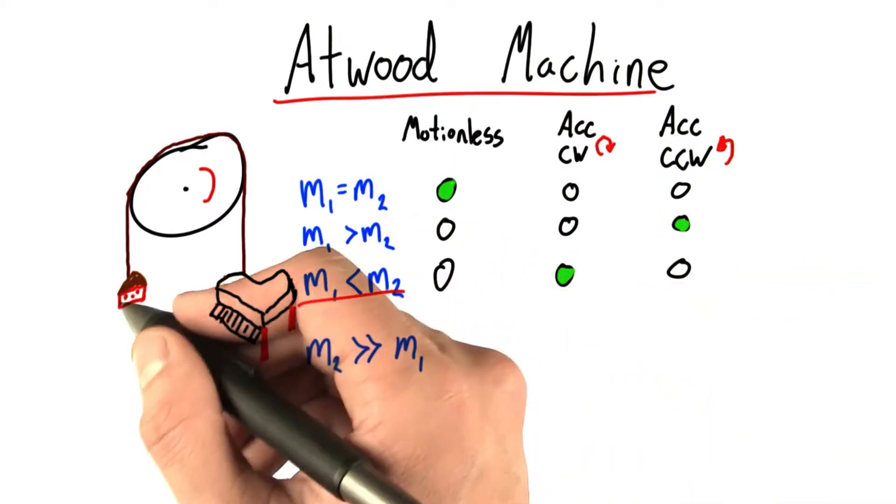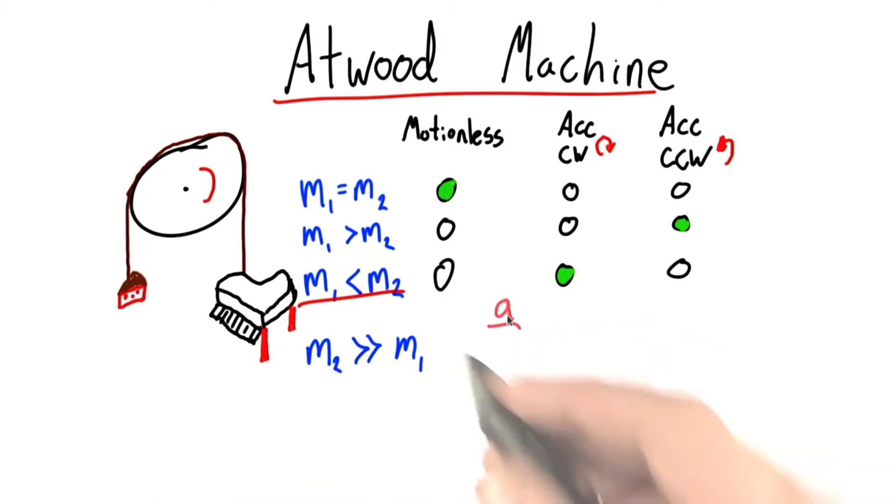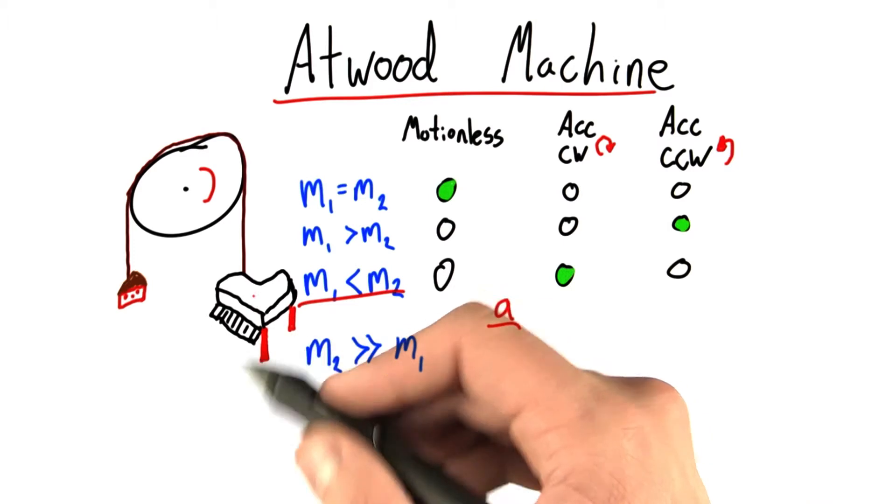The piano pulls more than the pie, of course. In fact, when M2 is so much bigger than M1, we can even estimate its acceleration.